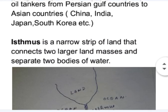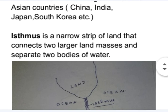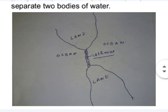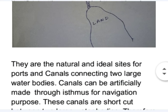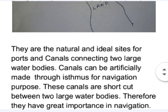Now, what is an isthmus? An isthmus is a narrow strip of land that connects two larger land masses and separates two bodies of water. In this diagram you can see two land masses connected by a narrow strip of land. This narrow strip connecting the land masses is the isthmus, and it separates the two oceans on either side of it.